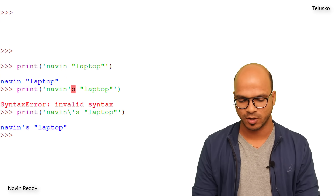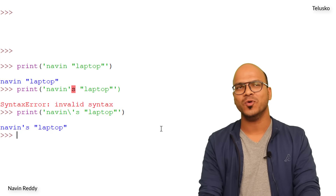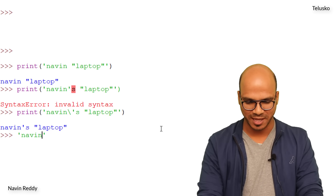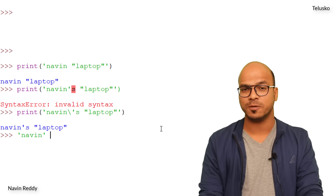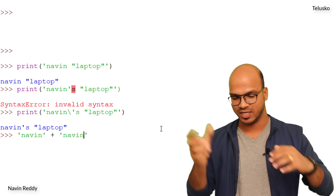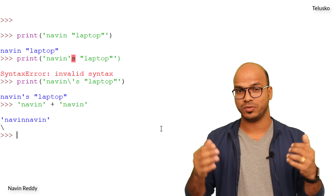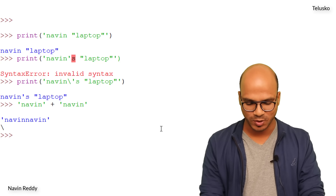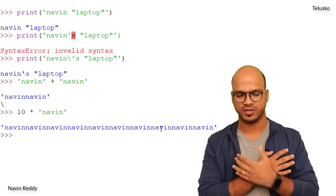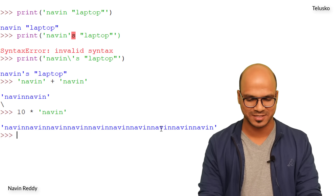Now for some fun — what if you want to print a string multiple times? You can concatenate strings using plus: 'Naveen' + 'Naveen' gives NaveenNaveen. Or multiply a string by a number: 10 * 'Naveen' prints Naveen ten times. You can experiment and play with it!